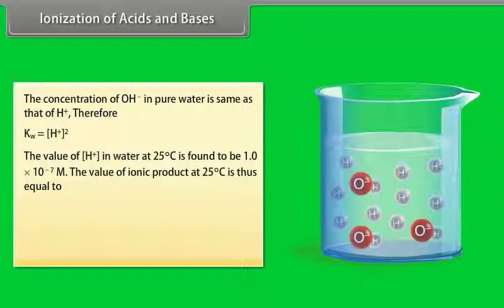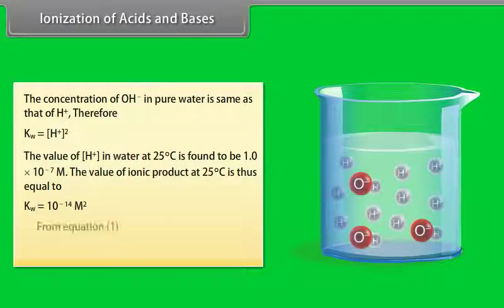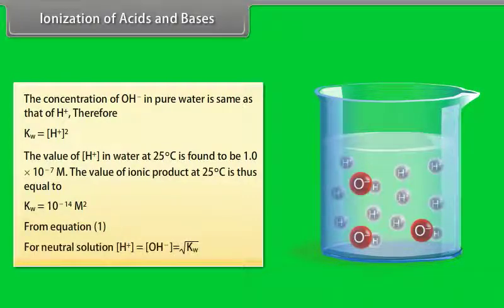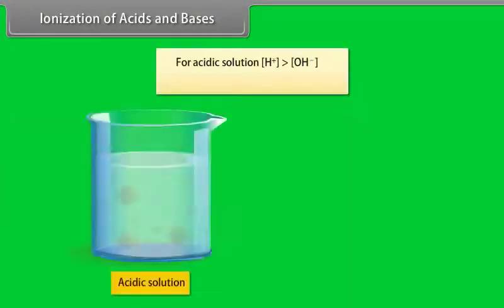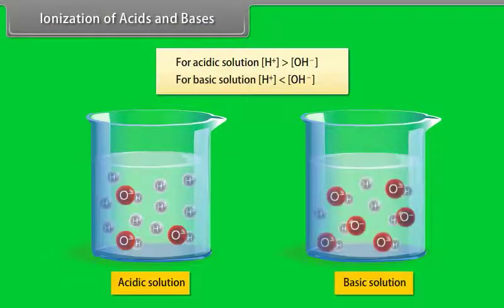The value of [H⁺] in water at 25°C is 1.0 × 10⁻⁷ M. The value of the ionic product at 25°C is thus 10⁻¹⁴ M². For a neutral solution, [H⁺] = [OH⁻] = √Kw. For an acidic solution, [H⁺] > [OH⁻]. For a basic solution, [H⁺] < [OH⁻].